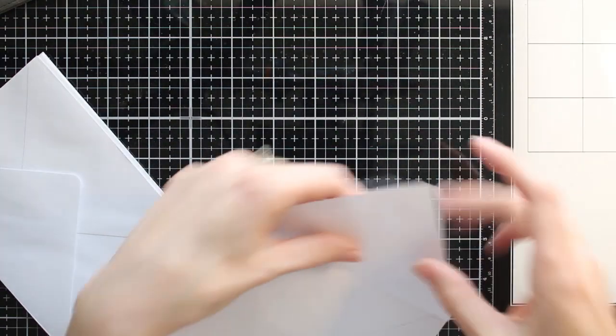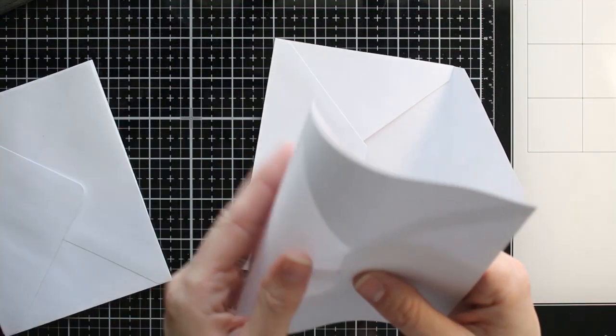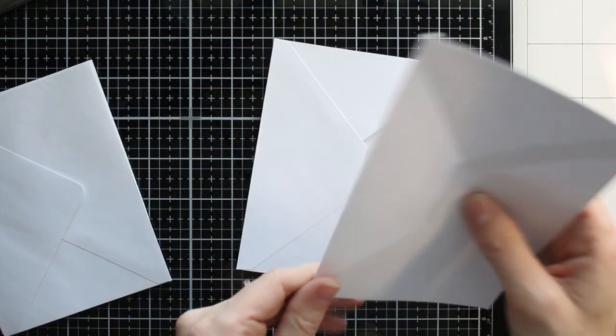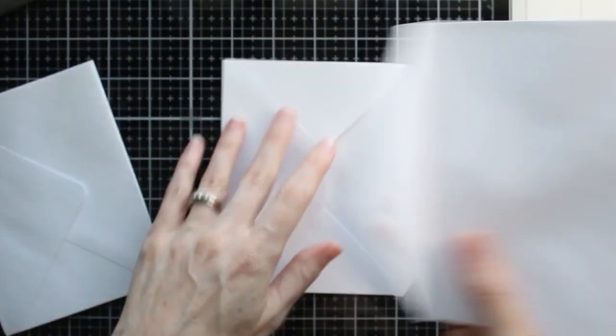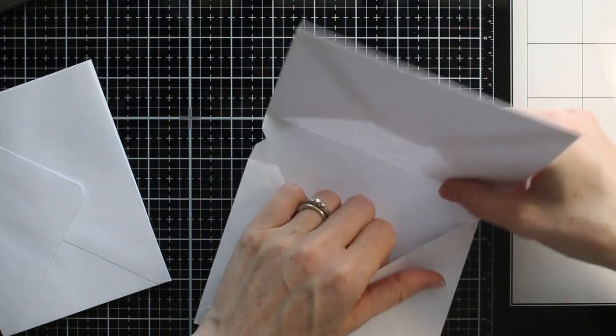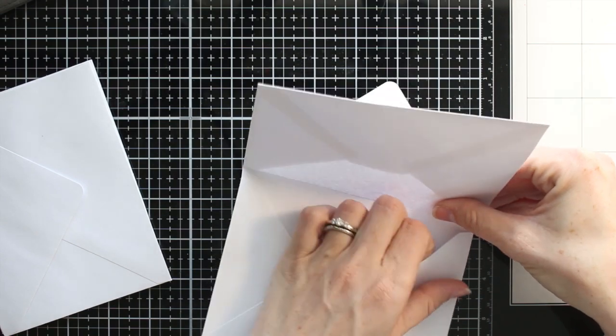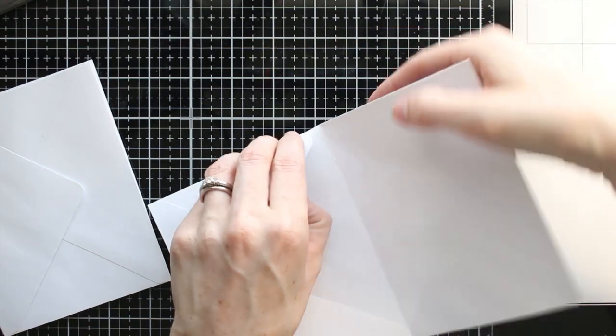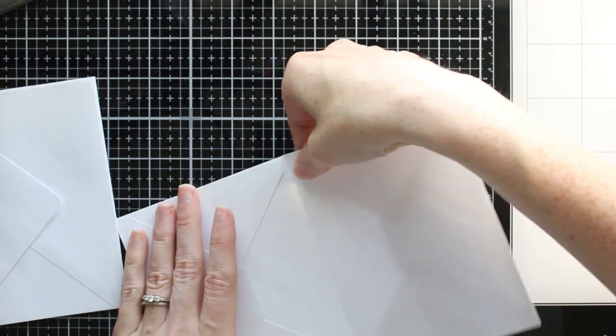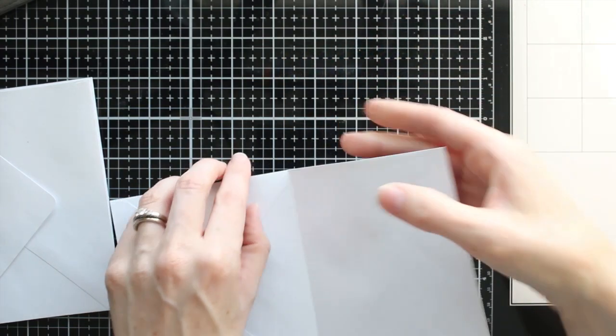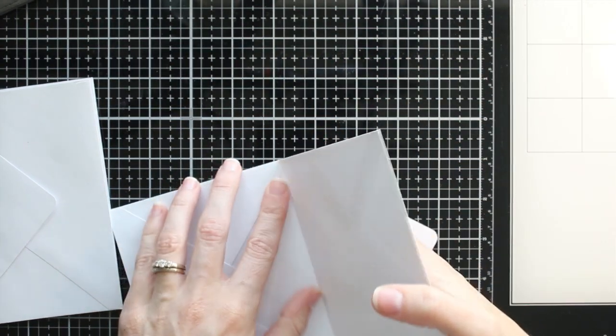So I have counted out six envelopes and I'm going to show you how I put these together to create my album. Super simple. Take your first envelope and then take a second envelope, bend the flap backwards, and then slip it inside the first one. And there you have it. So those are your first two pages.